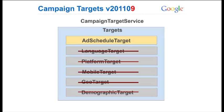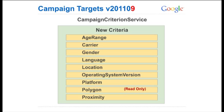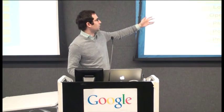Here's what's happening in v201109. All that's left in the campaign target service is the ad schedule target. Language target, platform target, mobile target, geo target, demographic target — all gone. They moved to the campaign criteria service. What we're doing is treating all of these different targeting parameters the same way that we treat keywords and placements — just another way of determining who sees your ad, whether that's a keyword search term, gender, age range, or mobile operating system.